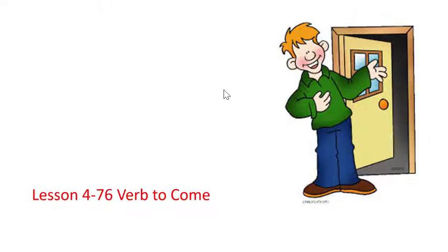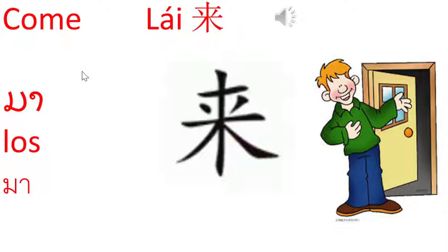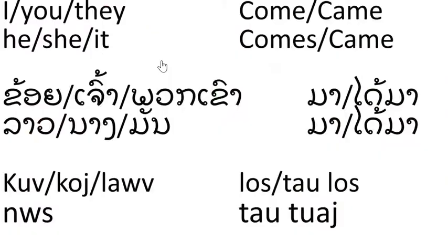Good morning, everybody. Today is lesson number four dash 76, verb to come. Last time we learned that to come means ma, lo, rai.